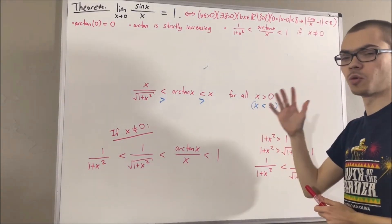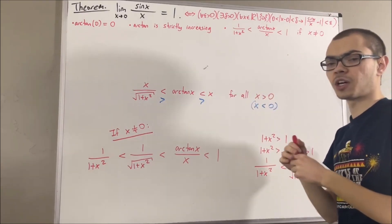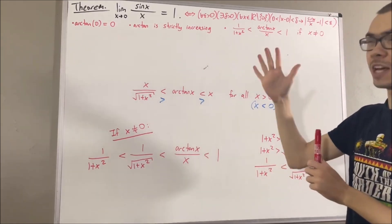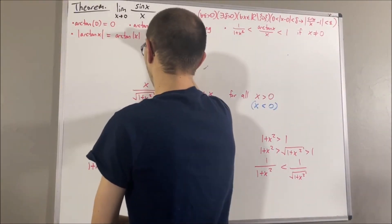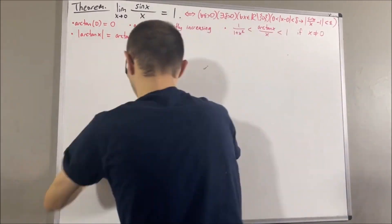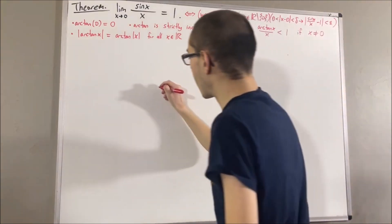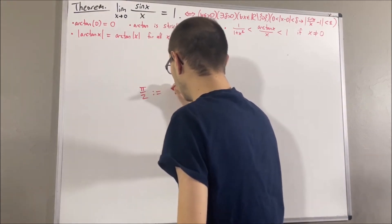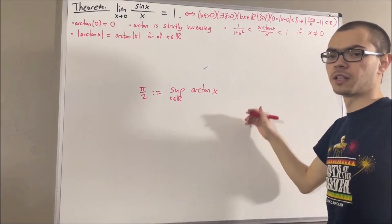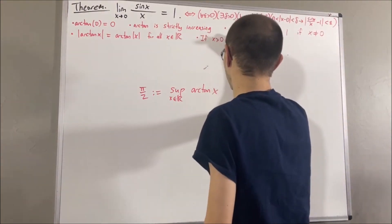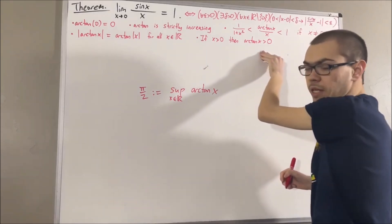We have also proven that arctangent is an odd function, so arctangent(−x) = −arctangent(x) for all real x. Using this, we showed that |arctangent(x)| = arctangent(|x|). We have also proven that arctangent is bounded, and we defined pi/2 to be the least upper bound of the arctangent function. Furthermore, if x is any positive real number, arctangent(x) is positive — and from this definition of pi and this fact, it immediately follows that pi is positive.